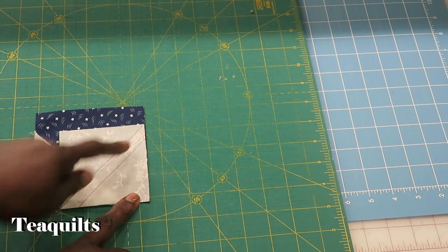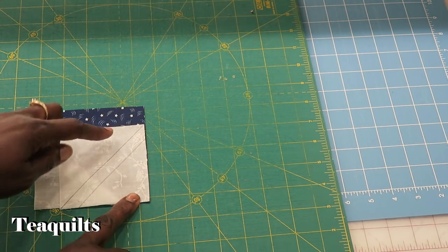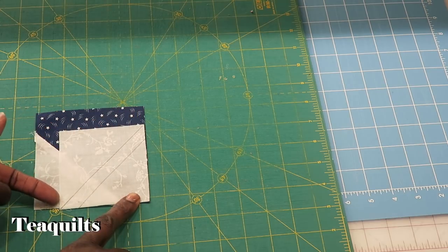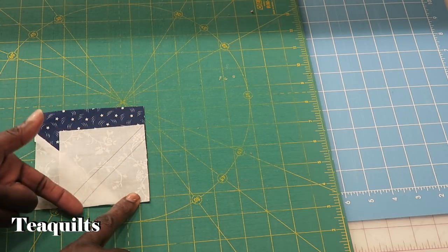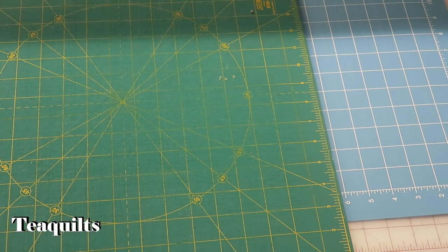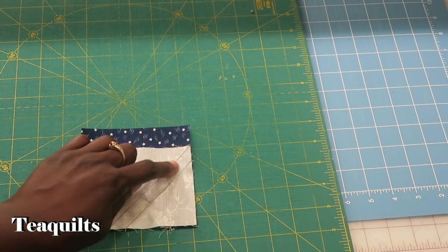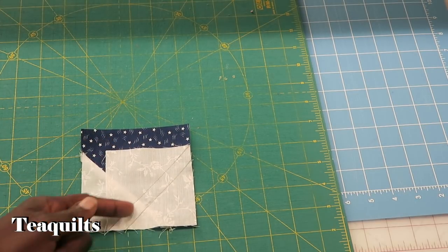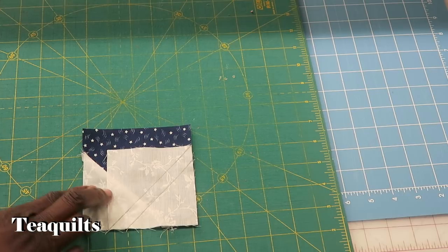We want to place it so that this diagonal line is on the inside, and again, we're going to stitch from one end to the other.